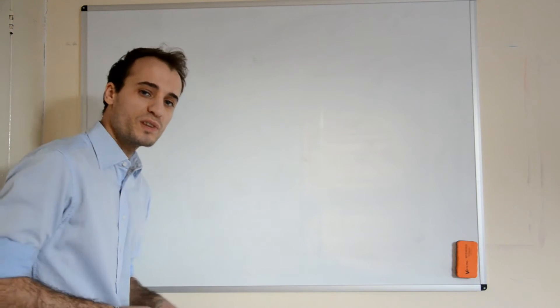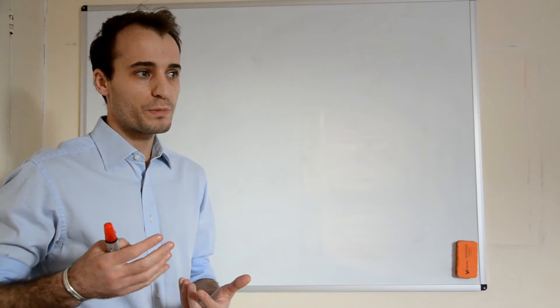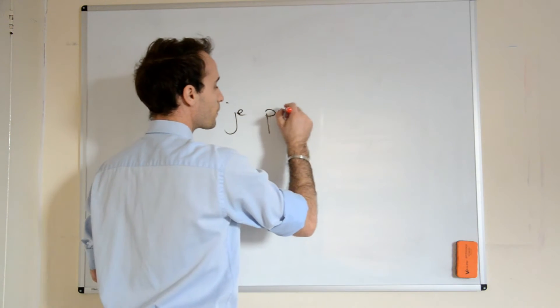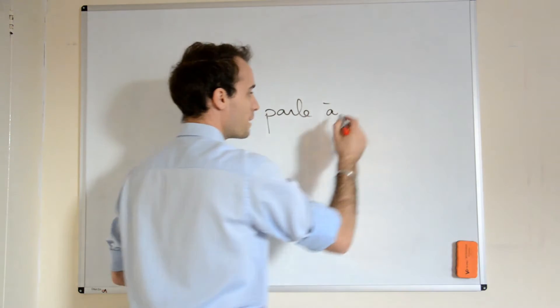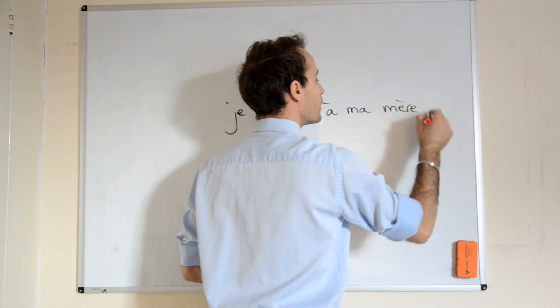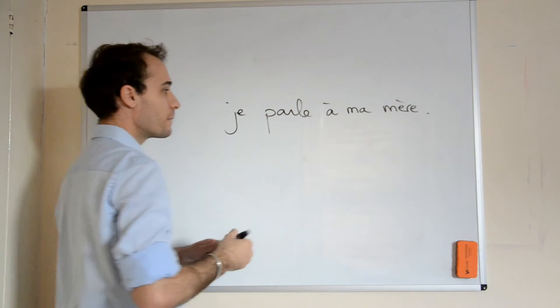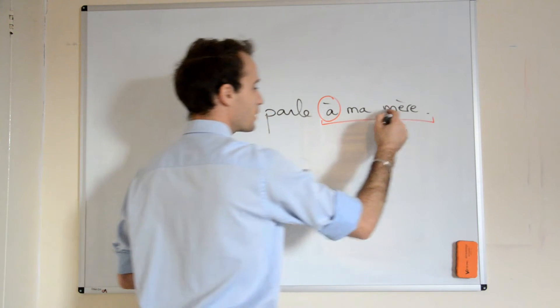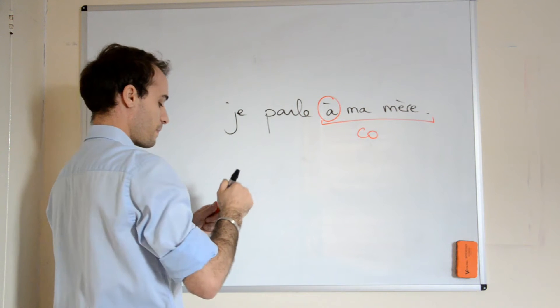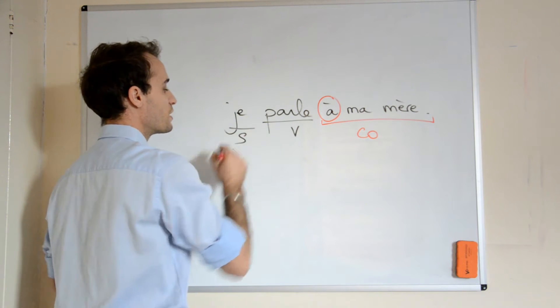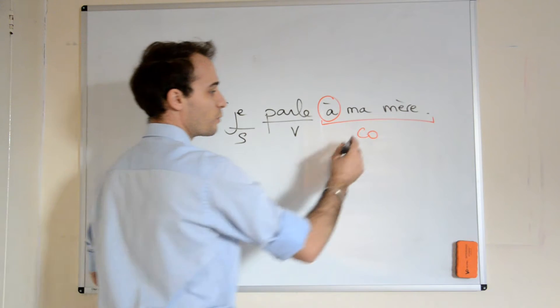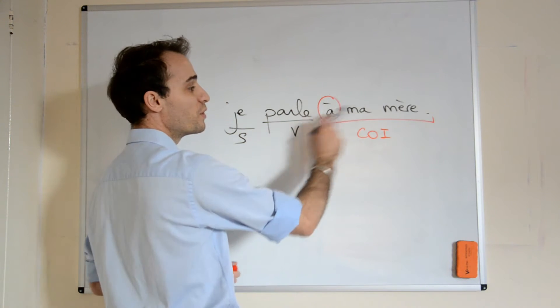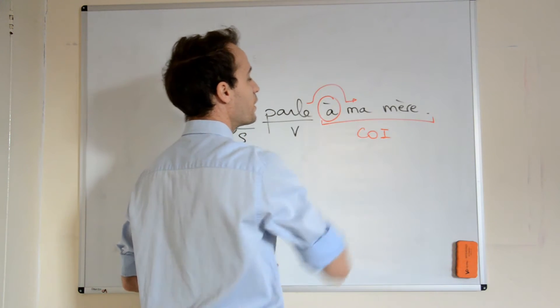As I said in the previous video, we have verbs that require a preposition for some of them. For instance, if I say je parle à ma mère, I speak to my mom, à ma mère, you can see that here there is something between my complement here and my verb. This is my verb and this is my subject. So that is un complément d'objet indirect, an indirect object complement. It's indirect because you've got a preposition between the verb and the complement.